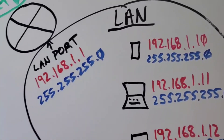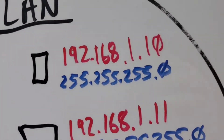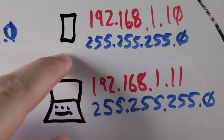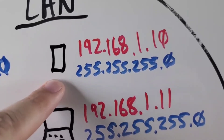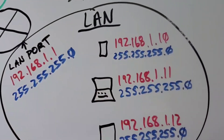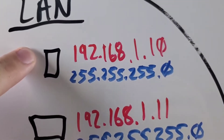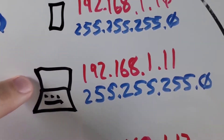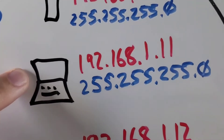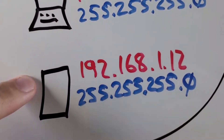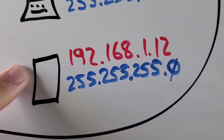Now that we're adding devices to the LAN ports and to the Wi-Fi of this router, they each need to have a unique IP address. Let's say this box represents a smartphone — it's going to take 192.168.1.10. And let's say this is a laptop — this laptop is going to take 192.168.1.11 because it also needs to be unique.